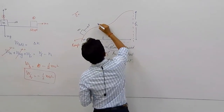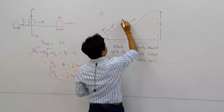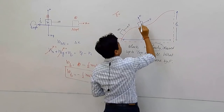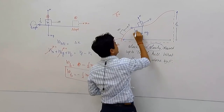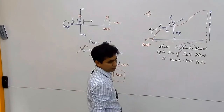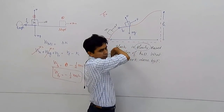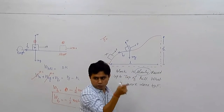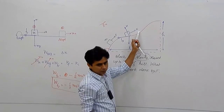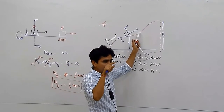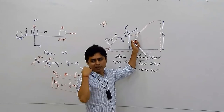Since the surface is rough, you cannot apply energy conservation. You must apply only the work-energy theorem, which is applicable in any case. If you make the free body diagram of the block at any point, the forces are: F parallel to the surface, normal N perpendicular to the surface, mg downward, and friction. These are all the forces acting on the block.